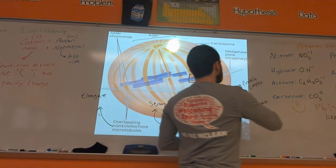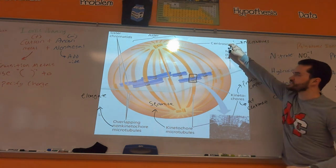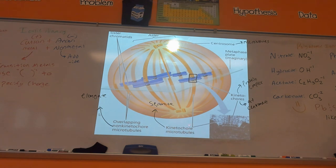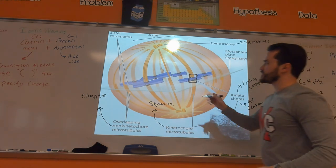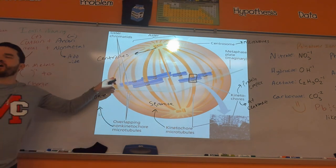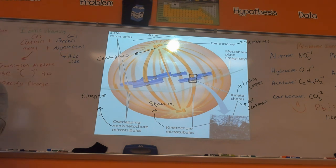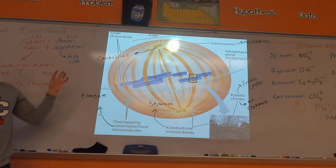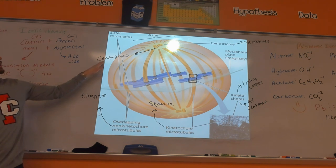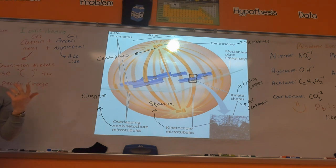The centrosome is the organizing center for the microtubules — they ultimately come out of the centrosome. There are two centrosomes at opposite poles, and these contain the centrioles. Interestingly, centrioles don't actually play a necessary role in this process. Experiments using lasers have destroyed the centrioles in animal cells and mitosis still happens — the microtubules still work properly. Scientists don't completely understand what specifically they do.